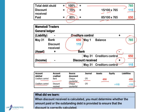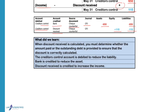Discount received is an income. Income increases profits so equity will increase by 115 Rand. When discount received is calculated, it is very important to determine whether the amount paid or the outstanding debt is provided, to ensure that you do the correct calculation for the discount.